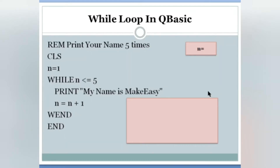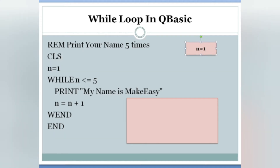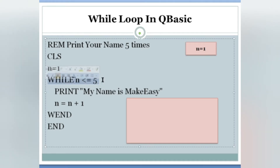Now as you can see, using the while loop we can do the same thing very easily. In this program we are printing our name five times only, but you can print it a hundred, a thousand, or two thousand five hundred times. I will show you exactly how to do that with a dry run. First, CLS to clear the output screen. N equals to one — we set the value N equals to one. Next, 'while N less than or equals to five' — this is the start of the while loop.